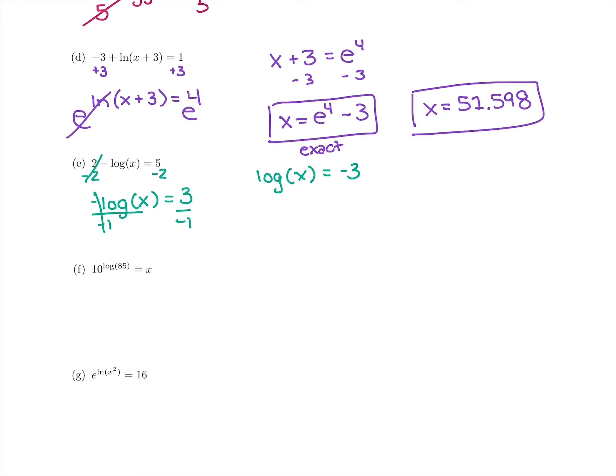And now to get rid of the common log, we're going to take base 10 of both sides. So x is going to equal 10 to the negative 3. And I'll grab my calculator and plug that in to get the decimal answer of 0.001.